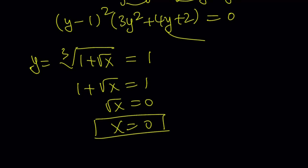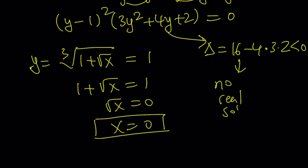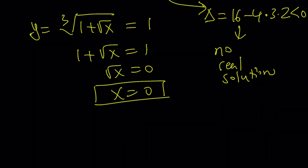What about the quadratic factor 3y squared plus 4y plus 2? If you check the discriminant — b squared minus 4ac — you get a negative value, which means there are no real solutions from that branch. There are complex solutions involving i, from which you could evaluate x, but we only have one real solution. I'll also show the graph and discuss the domain at the end.